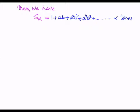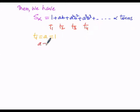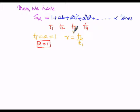Here T1 the first term is 1, the second term is ab, the third term is a squared b squared, and the fourth term is a cubed b cubed. Clearly, the first term a equals 1. The common ratio r is given by T2 by T1, which is ab divided by 1, so r equals ab.